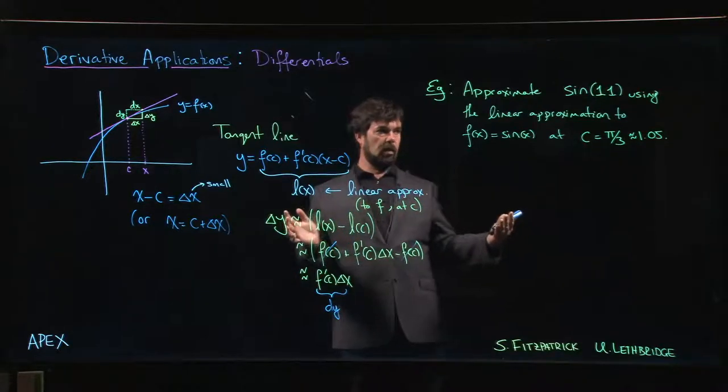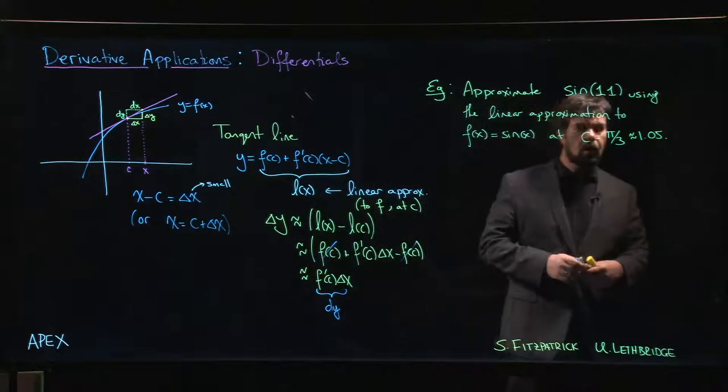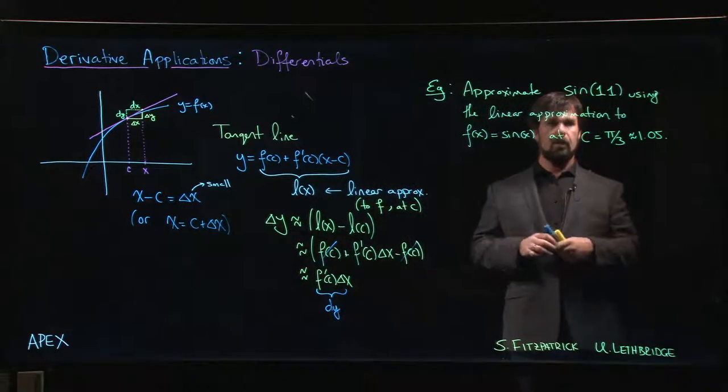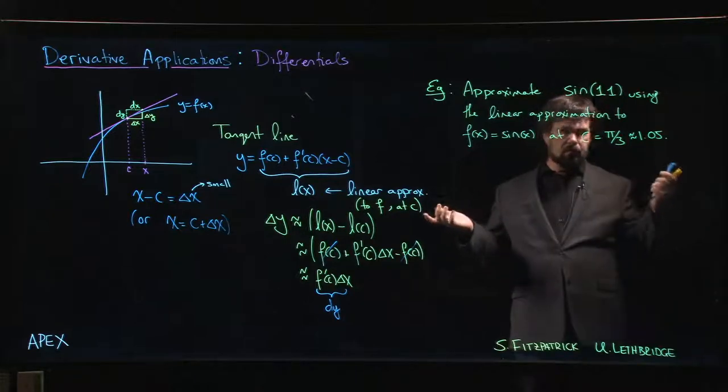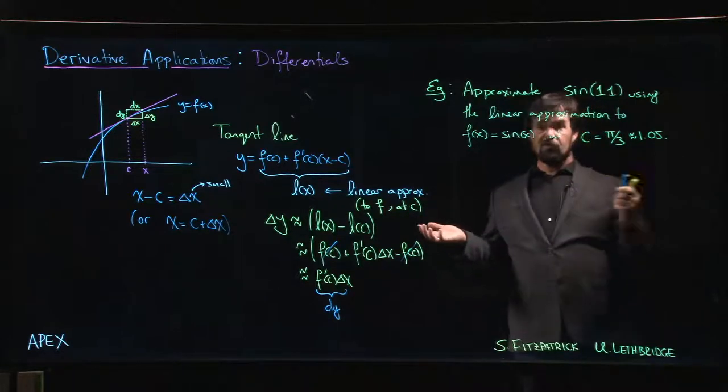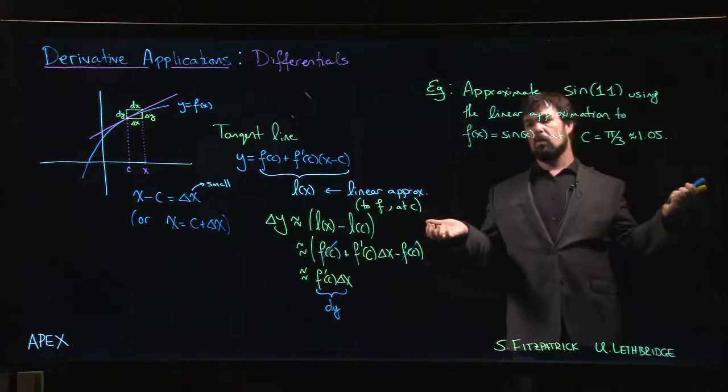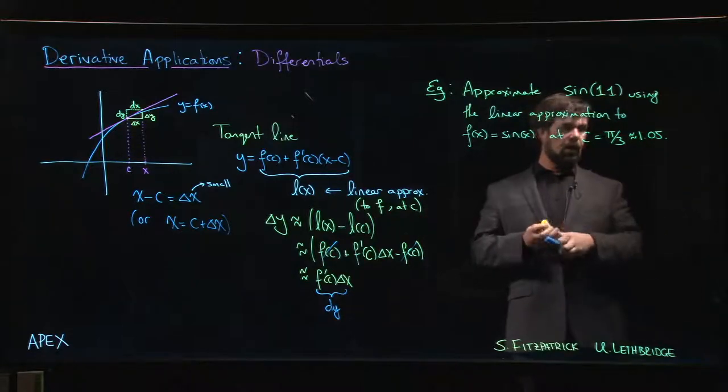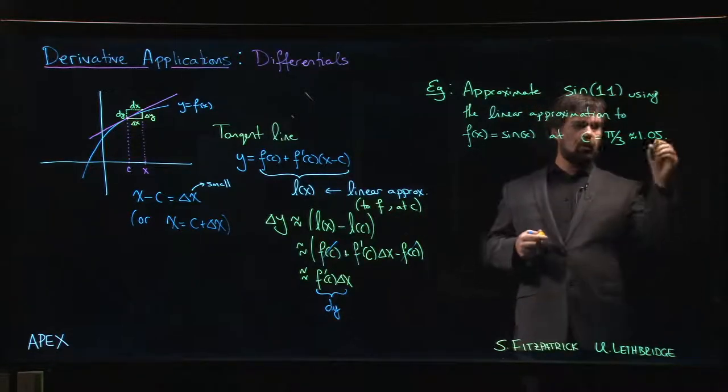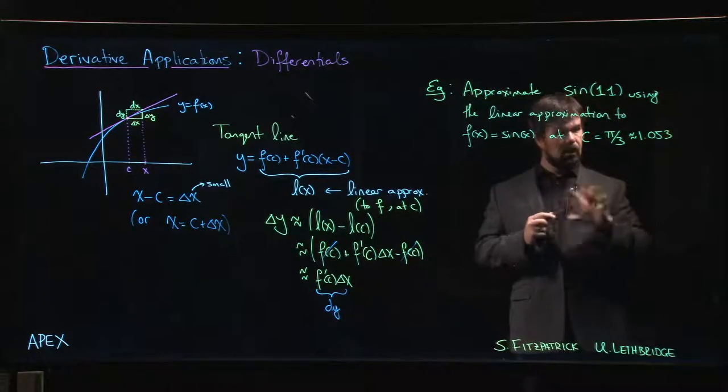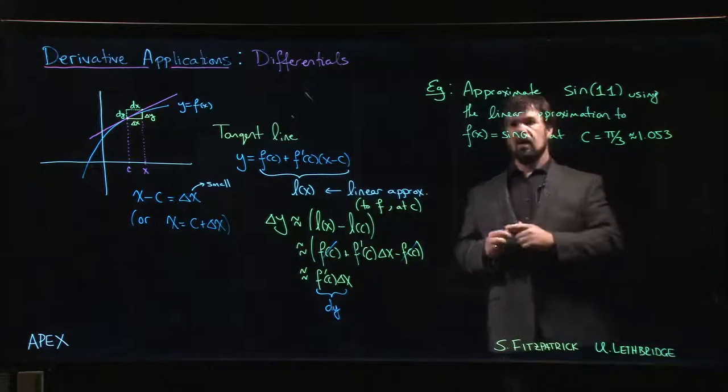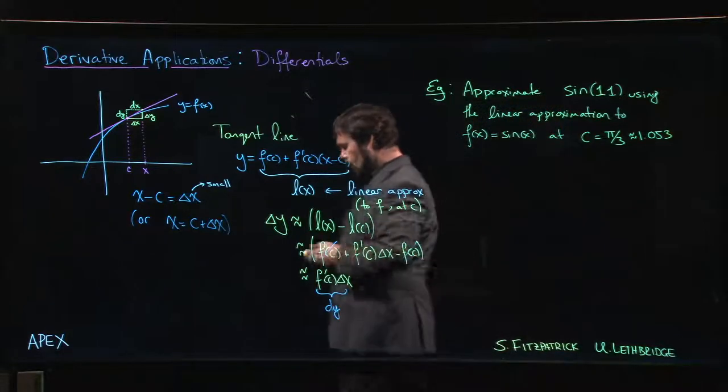Okay, so here's our value of c. We want to do this approximation at 1.1, which conveniently enough is close to a value where we happen to know the value of sine. I think if we were to add one more decimal, this is maybe 1.053.